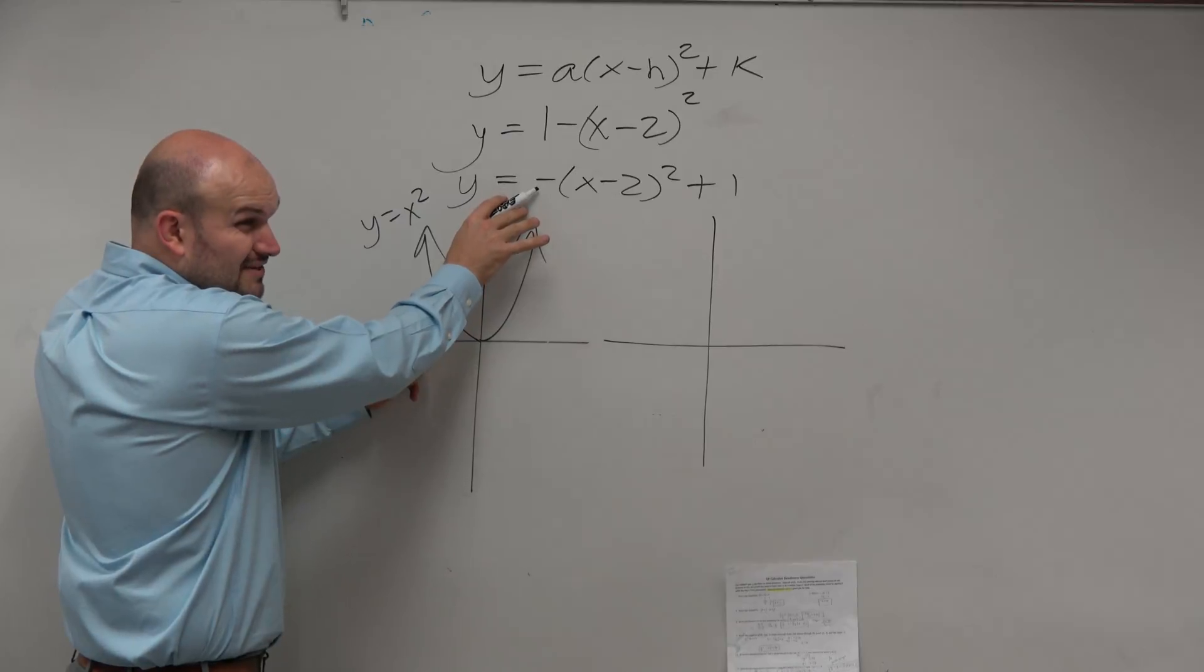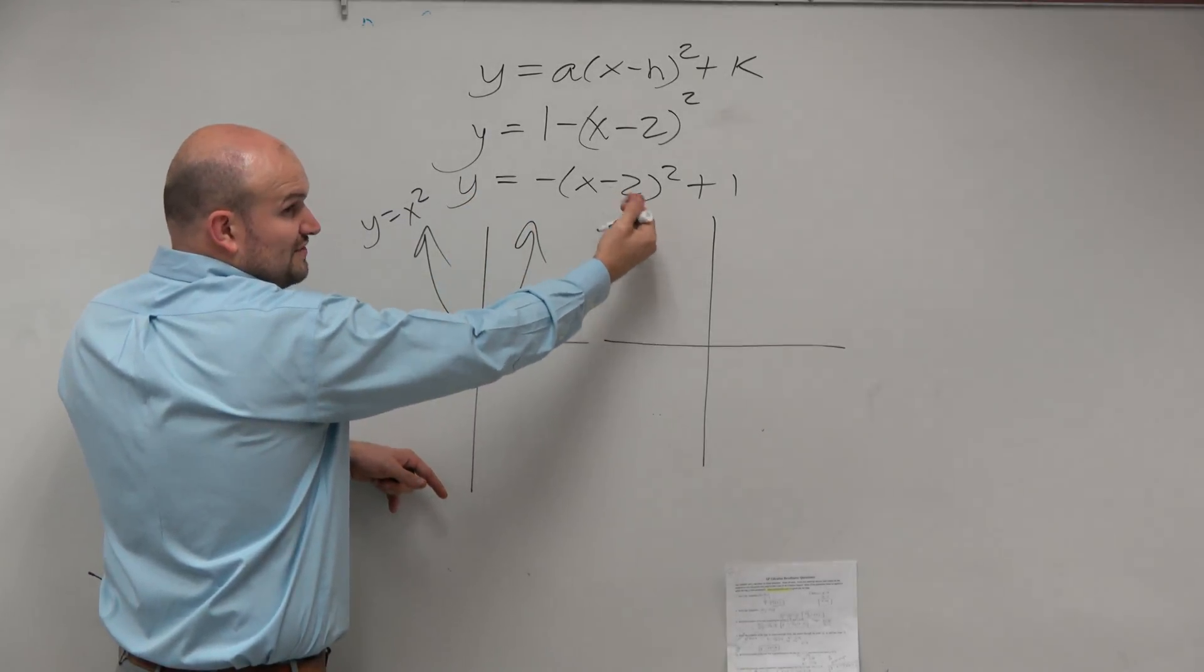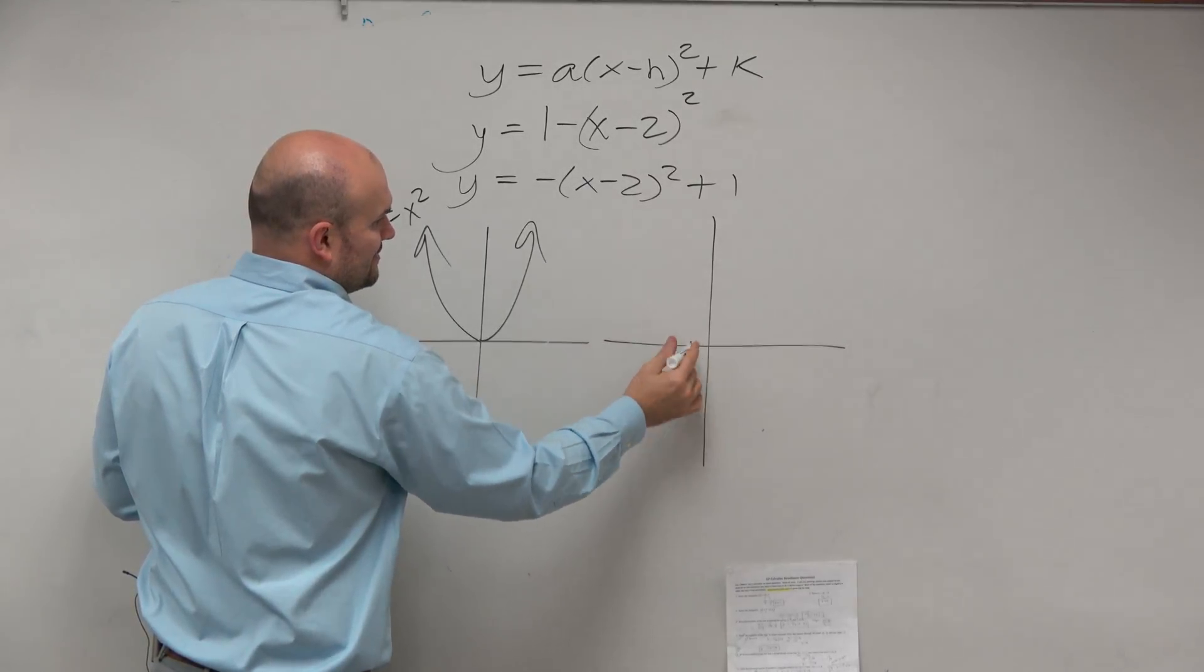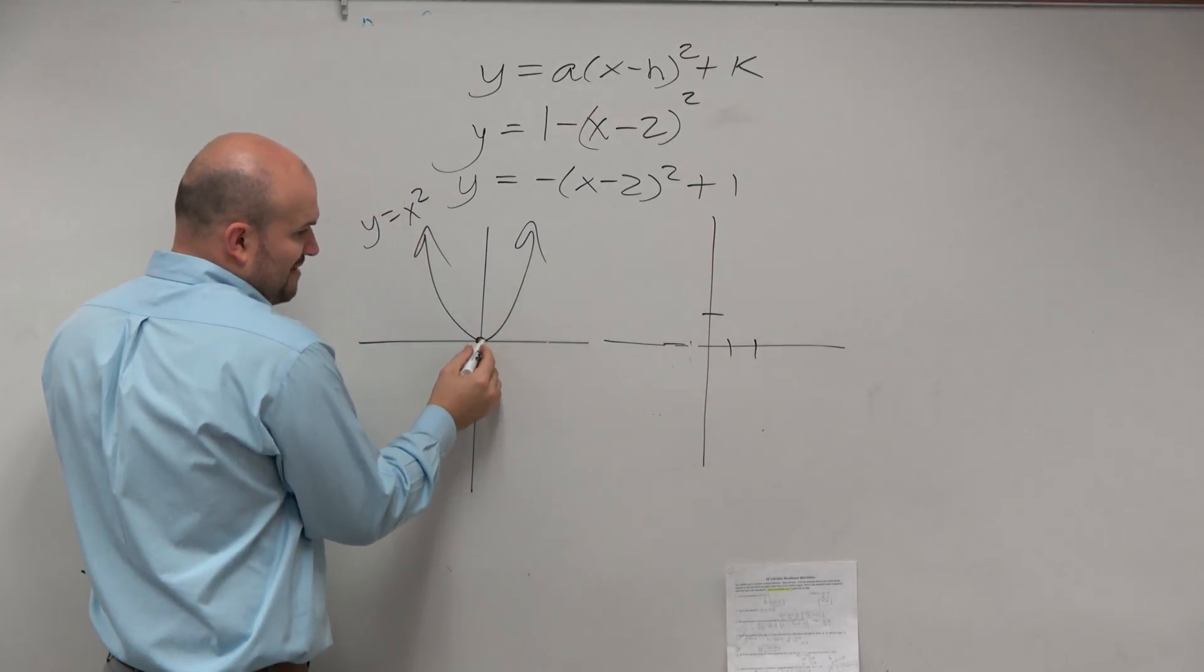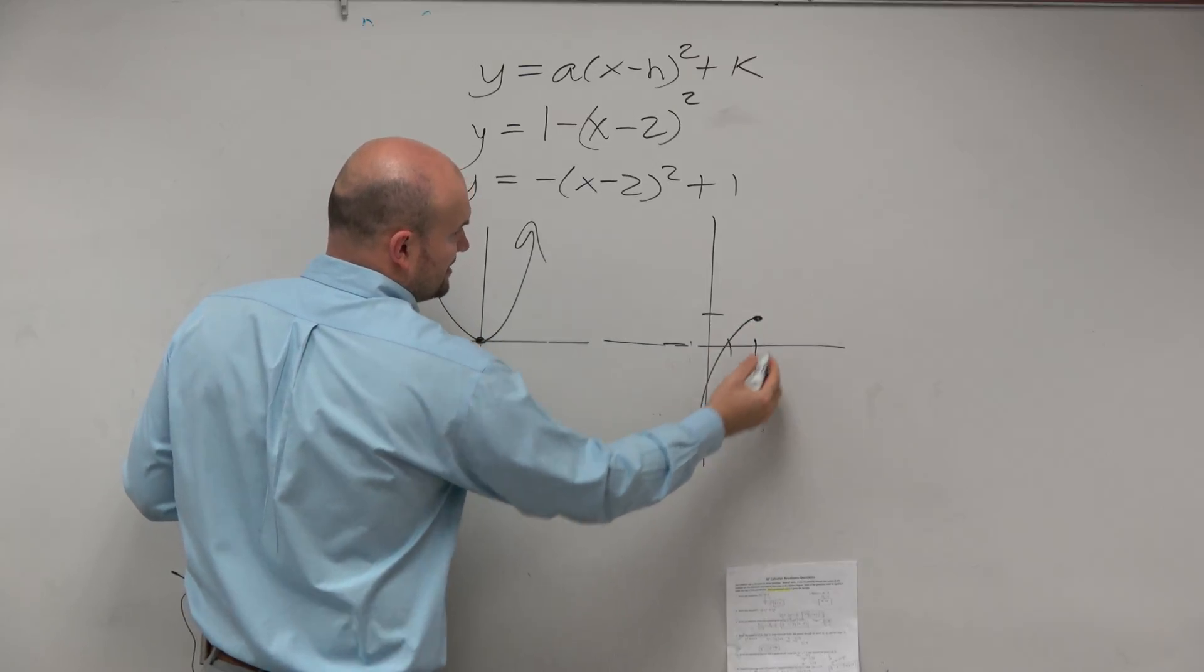So we have a negative on the outside - that's reflecting the graph down. This is shifting the graph two units to the left, I'm sorry, two units to the right, and then one unit up. So here's my vertex. That vertex got shifted, and then the graph looks something like this.